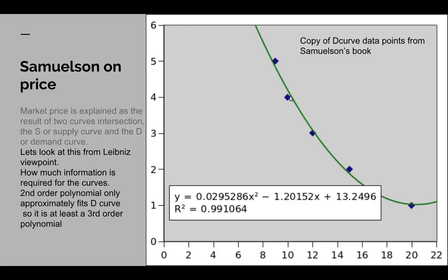Here we have one, two, three, four, five data points, and his three-parameter curve isn't going to be enough to fit it. So, he has provided data which is at least of third-order, possibly fourth-order polynomial.